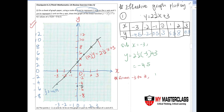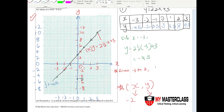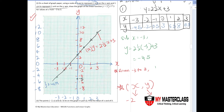For part two: the points (negative two, a) and (b, three) lie on the graph from part one — find the values of a and b. Coordinates are always in the form (x, y). For (negative two, a), x = negative two, so find the corresponding y-value on the graph. At x = negative two, y = negative two, therefore a = negative two.